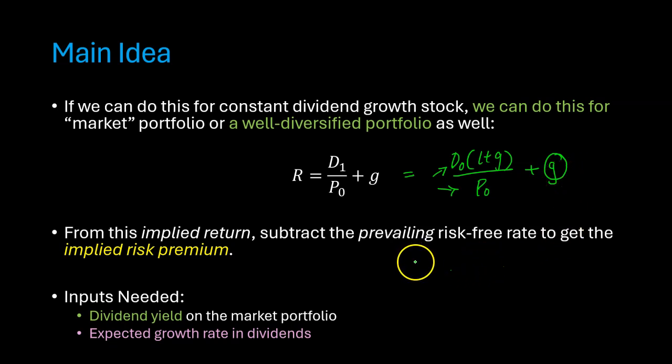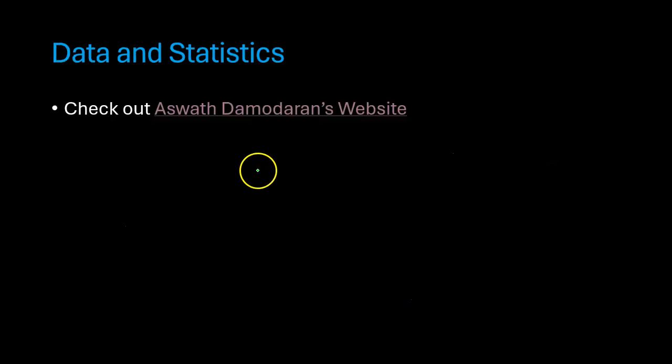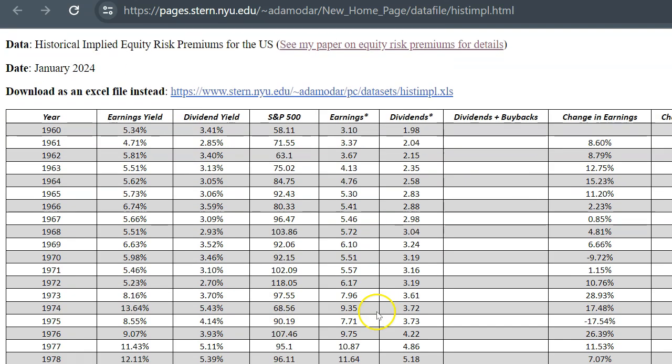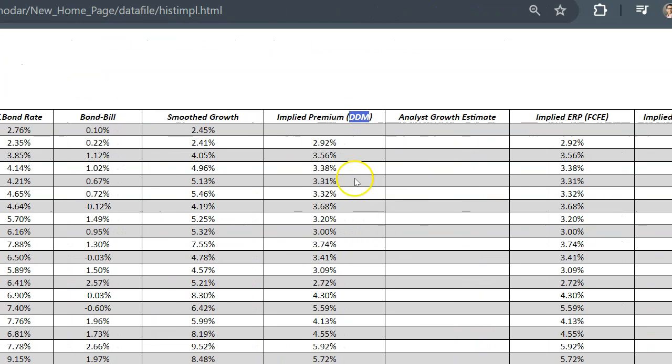So for instance, ValueLine does a survey called the Investment Survey, which provides the five-year growth rate in dividends for ValueLine's Industrial Composite Index, which is basically a well-diversified portfolio of risky assets. Now, you may need a subscription for that. But fortunately, there is another very credible source of information, which is this website that is maintained by Professor Aswath Damodaran from New York University. It shows calculations on historical implied equity risk premiums. The data goes all the way from 1960 to most recently January 2024. Over here, you will see other inputs such as dividend yields and earnings yields. And then this information is used to calculate the implied premium based on the dividend discount model.